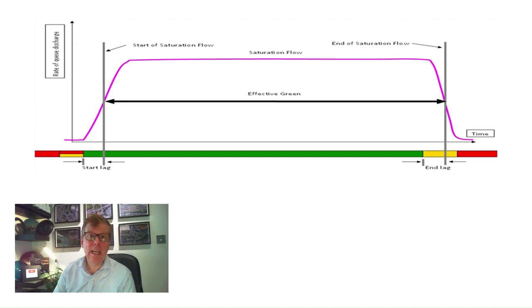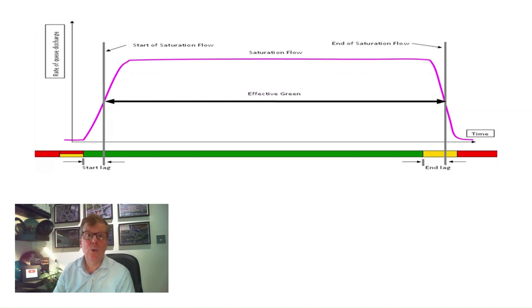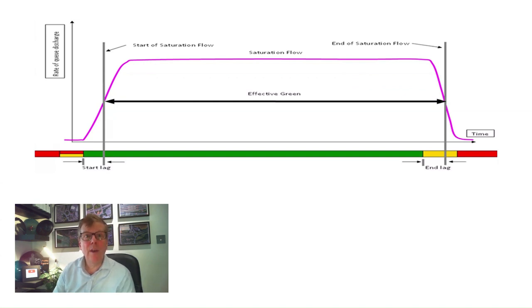Once we know the likely level of demand, we then need to understand the capacity of the proposed design to ensure it can cope with the traffic expected to use it. We therefore need to establish what is known as the saturation flow for each approach lane.